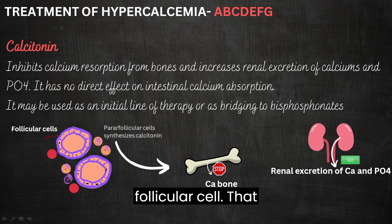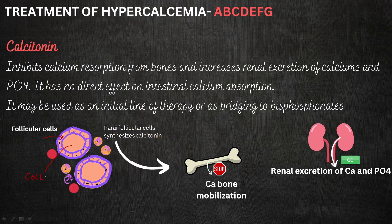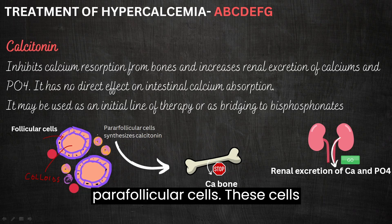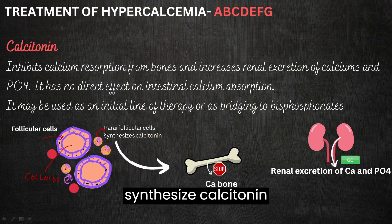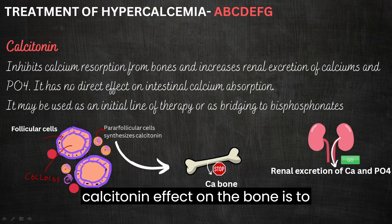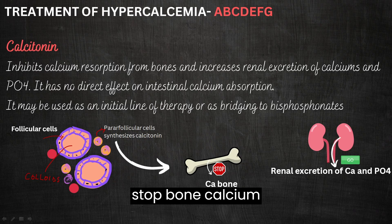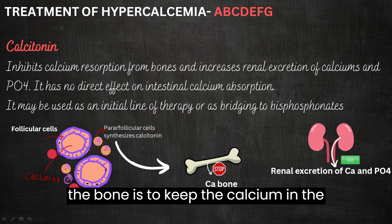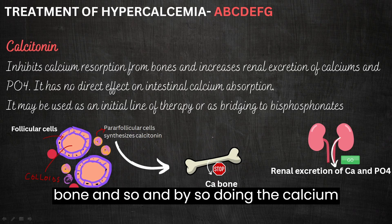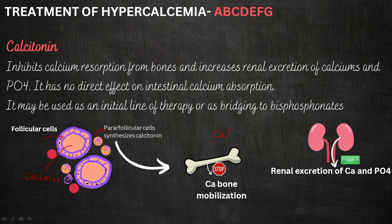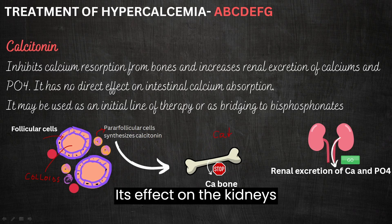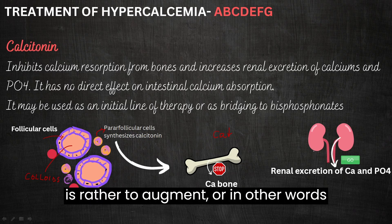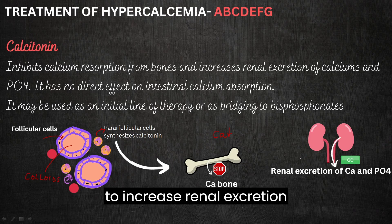What I have here is the follicular cell that contains colloids. In between these follicular cells are parafollicular cells, which synthesize calcitonin. Calcitonin's effect on the bone is to stop bone calcium mobilization — it keeps calcium in the bone, so calcium levels in the blood will decrease. Its effect on the kidneys is to increase renal excretion of calcium and phosphates.